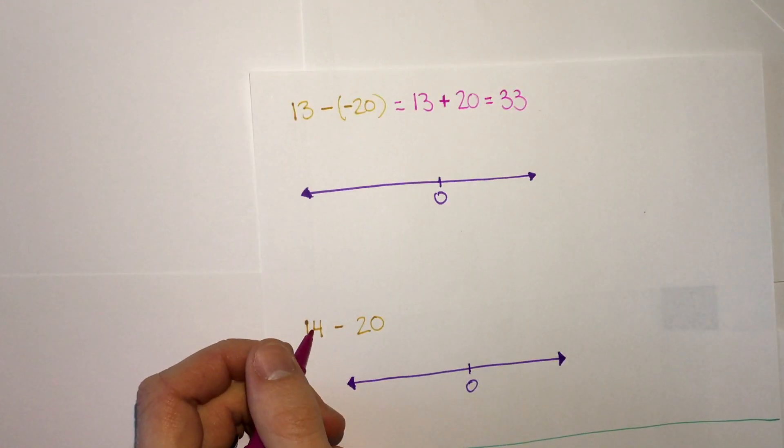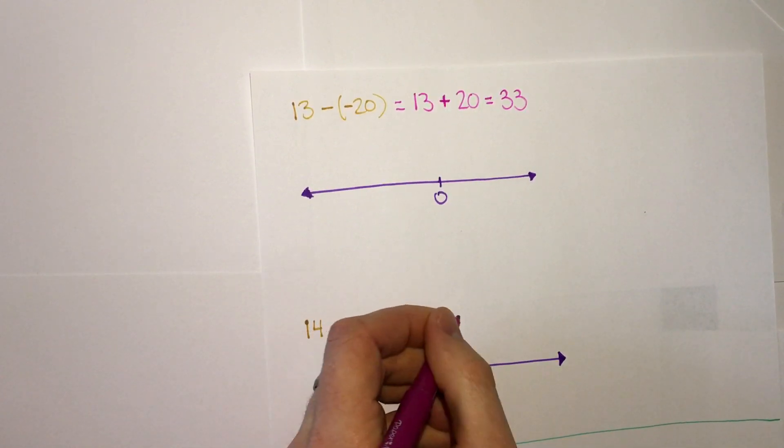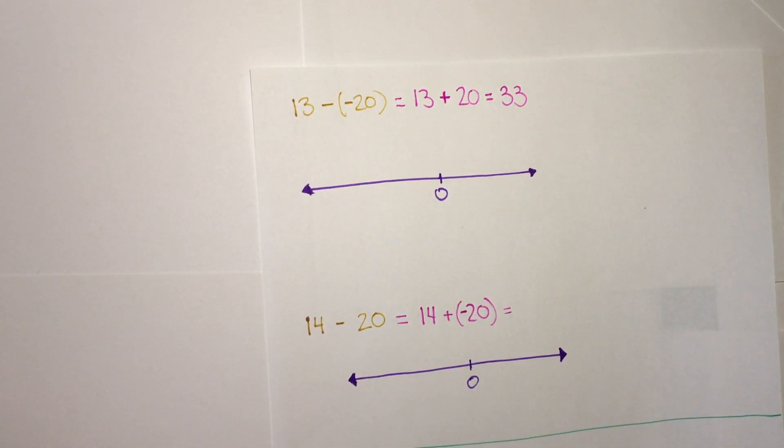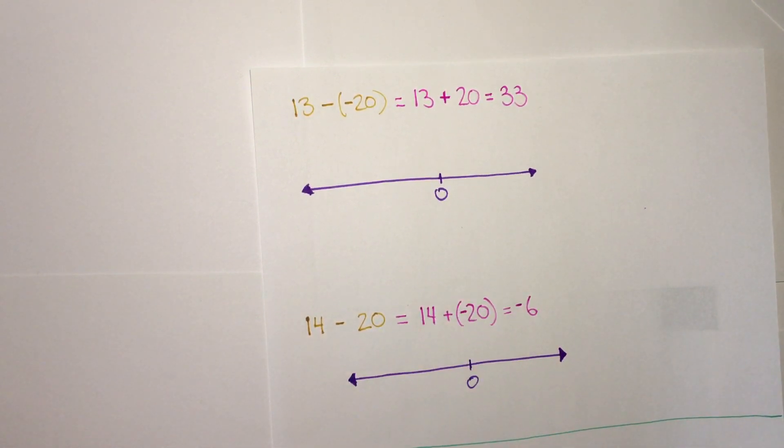The last one, 14 minus 20. We'll keep, change, change. Keep 14. Change to addition, and change to negative 20. So positive and a negative. We will get 20 minus 14 is 6. The negative is bigger. So we have negative 6.